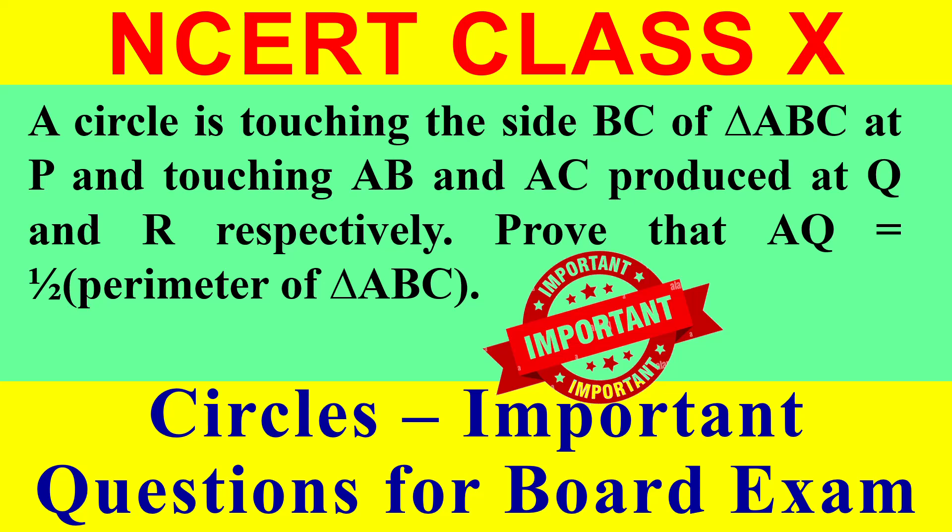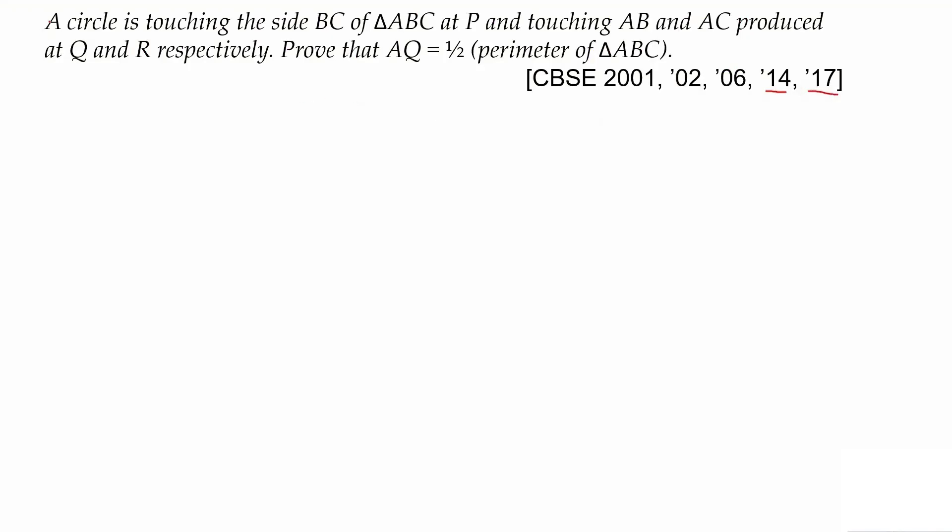One of the most important questions which appeared in 2001, 2002, 2006, 2014, and 2017. This is very important for this year also. A circle is touching the side BC of triangle ABC at P. The diagram is not given. The circle is touching AB and AC produced at Q and R respectively.